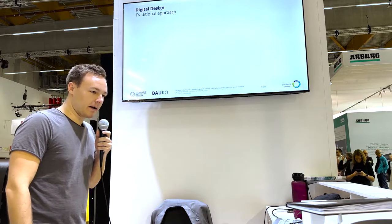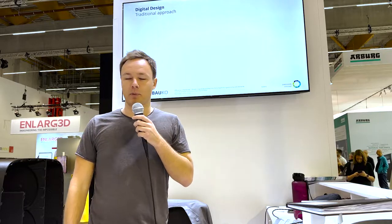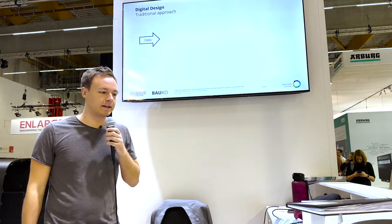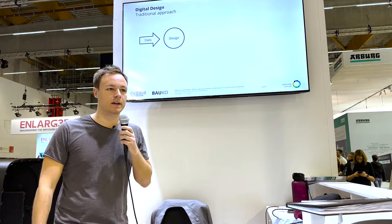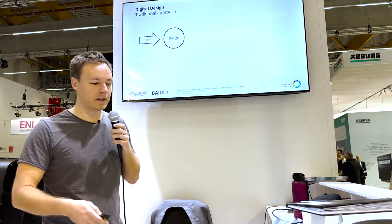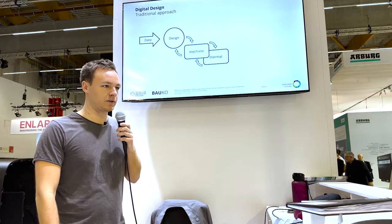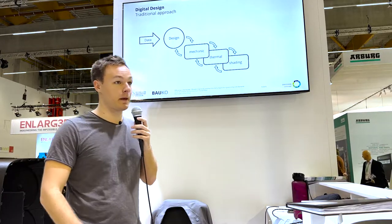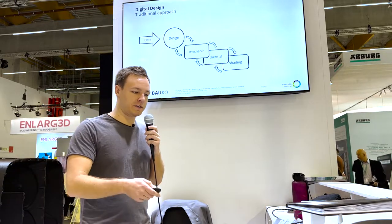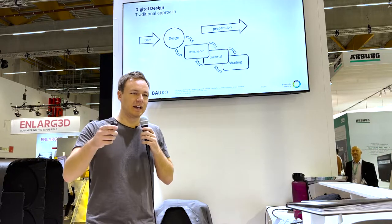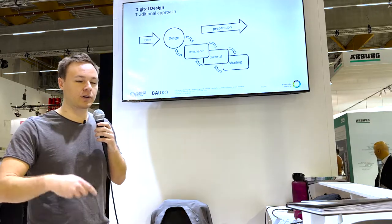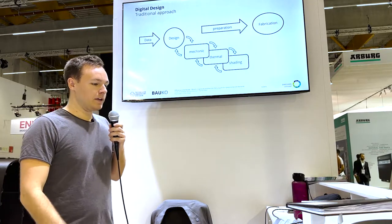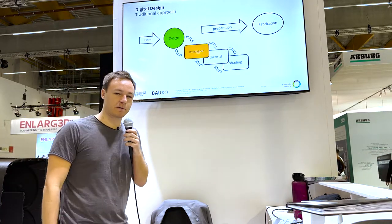I would like to talk about the digital design and digital fabrication approach we are using or want to use in the future. The traditional approach is: you get some data from an architect, make your design for the facade, and at some point you deal with engineering aspects regarding mechanics, thermal performance, and maybe shading features. For all these things you have different tools, but it's not a really closed loop. Then you go to preparation and want to digitally fabricate it with the Flexbot in the end, using very different tools.